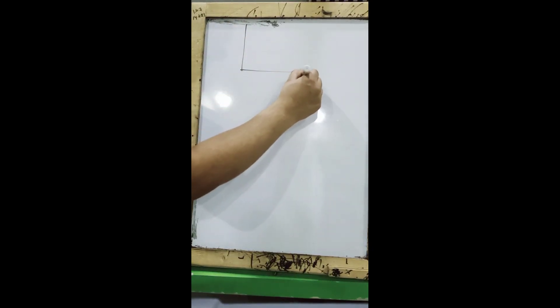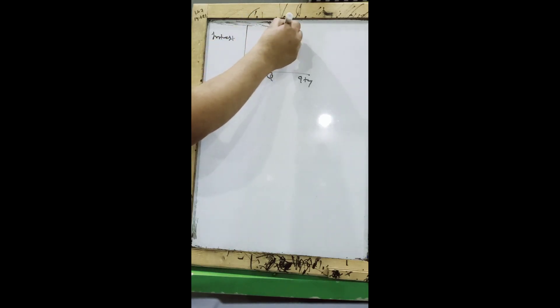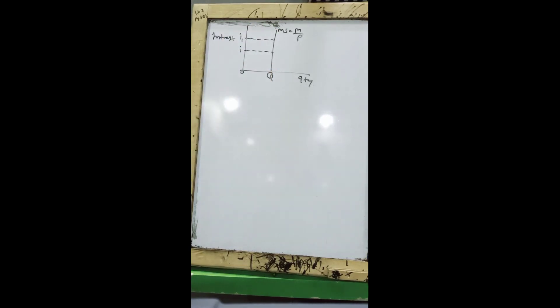Now for the money supply curve: taking quantity of money on one axis and nominal interest rate on the other, the money supply curve is vertical — even if the rate of interest changes, the quantity of money supply does not change. This is because money supply is the total stock of money held by people at a given point of time, so it is a fixed quantity.